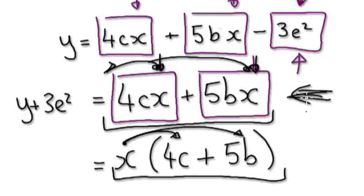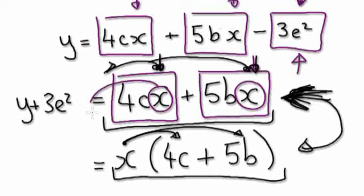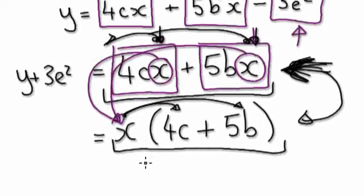So from here, you would factorize it. Look — you've got x in common here and x in common here, so take the x out. Take this x out as well, because x is in common.